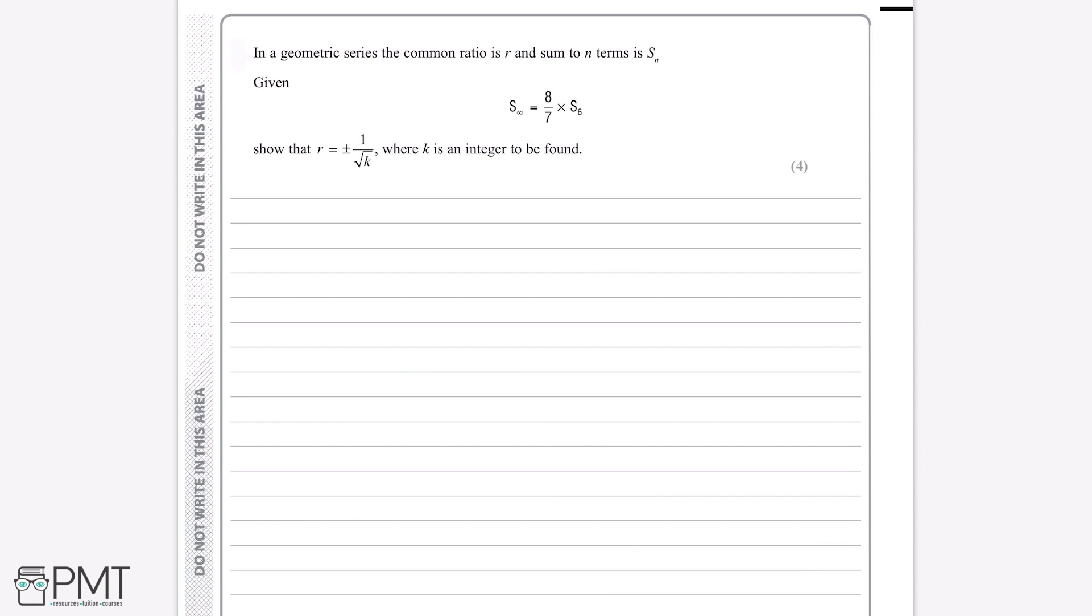First of all we need to write down the equation for the sum to infinity of a geometric series and the sum of the first n terms. The sum to infinity formula is a/(1-r), this is a formula you have to learn, and similarly the sum to n terms, and there are two formulas for the sum to n terms.